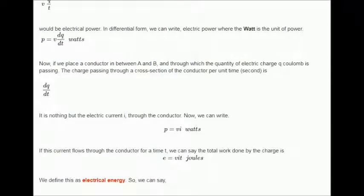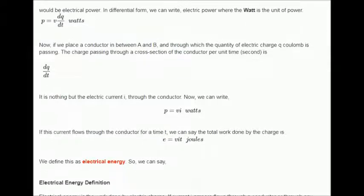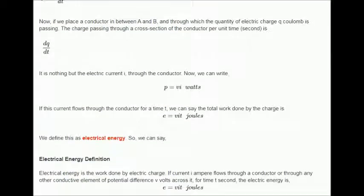Now, we can write as follows and if this current flows through the conductor for a time T, we can say the total work done by the charge is represented as below. We define this as electrical energy. So, we can say the electrical energy definition is the work done by electric charge.